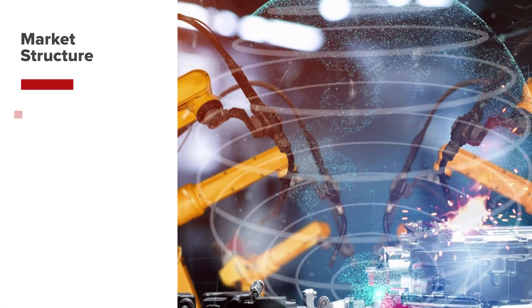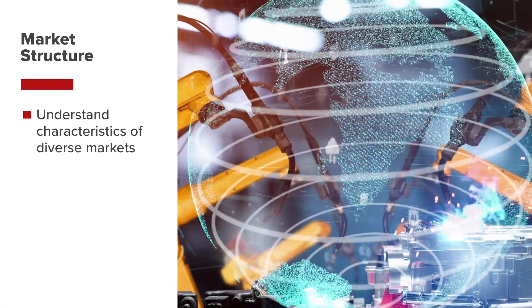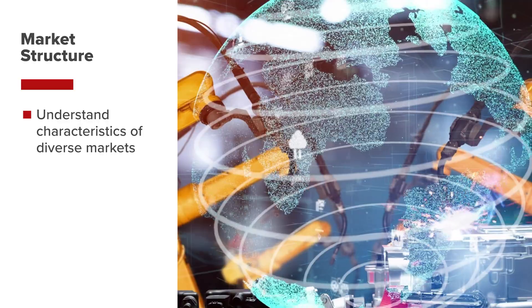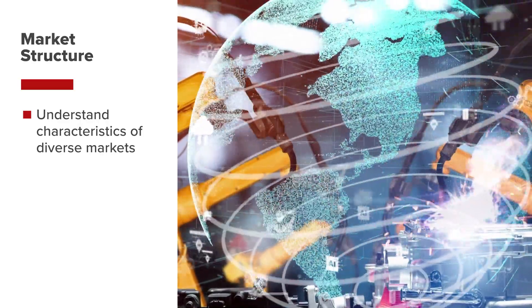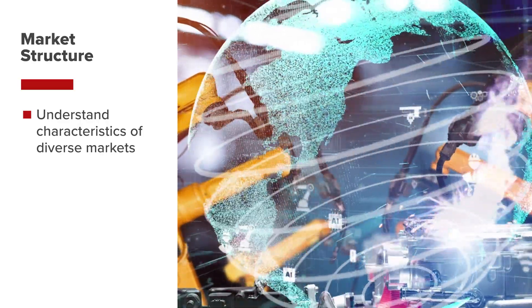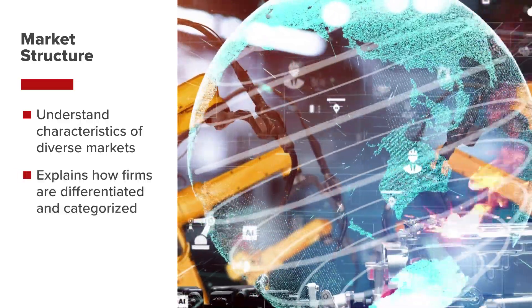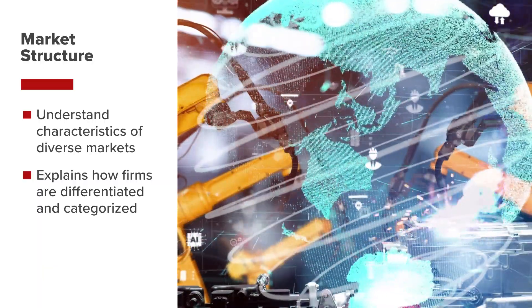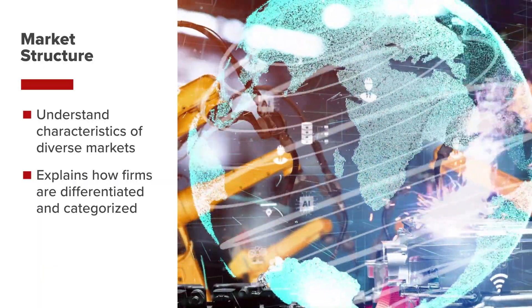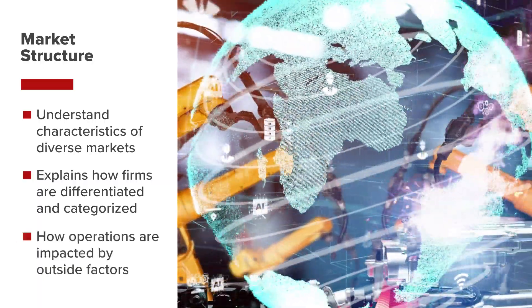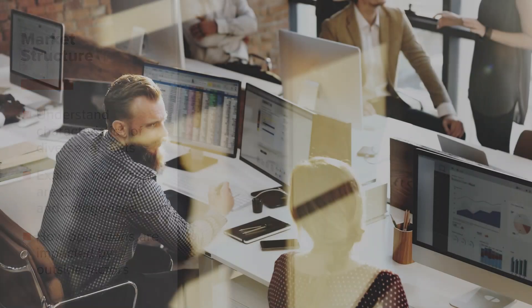Market structure attempts to make it easier to understand the characteristics of diverse markets. It also attempts to explain how firms are differentiated and categorised by the types of goods they sell and the impact on their operations coming from outside factors.